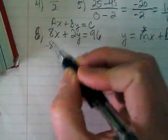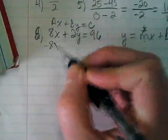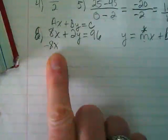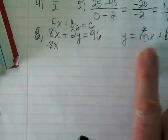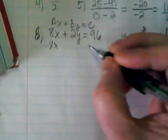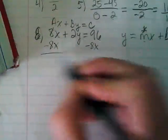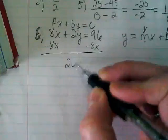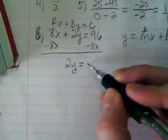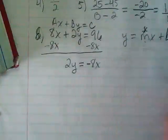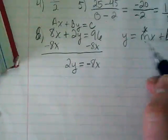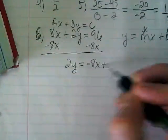So the first thing I want to do is subtract this 8X. It has the X with it, which means it's going to end up being where my slope shows up. That's going to leave us with 2Y on the left. I'm going to put the negative 8X here because that's where it goes in this equation. And the 96 is our plus B.